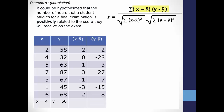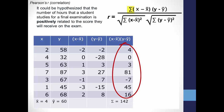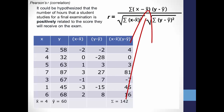The formula tells us to multiply these two scores together. So you have negative 2 times negative 2, or 4. Then 0 times negative 28 is 0, and so on. Sigma tells us to add all of these products together, which equals 142. That means 142 is what goes into the numerator of this formula.